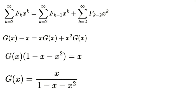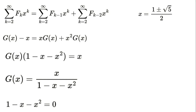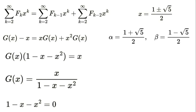Now to find a general formula for f(k), we'll use a technique called partial fraction decomposition. This involves breaking down the generating function into simpler parts. First, let's factor the denominator 1 - x - x². Its roots are x = (1 + √5)/2 and x = (1 - √5)/2. Let's call these roots alpha and beta respectively, so alpha = (1 + √5)/2 and beta = (1 - √5)/2.